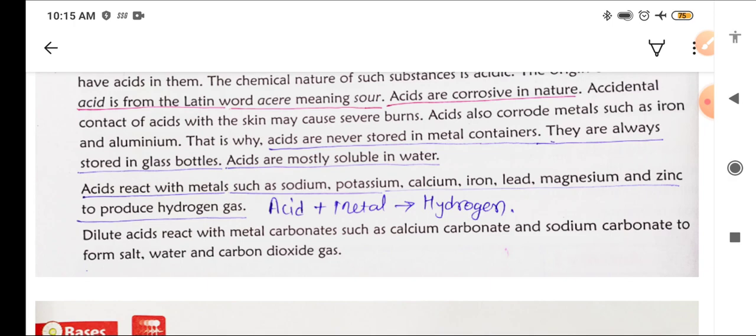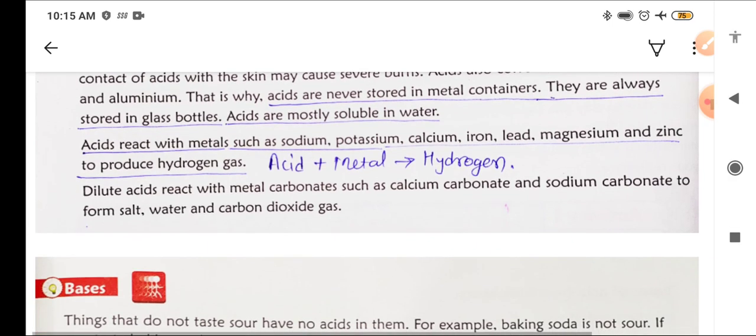Acids are corrosive in nature. Accidental contact of acids with the skin may cause severe burn. Acids also corrode metals such as iron and aluminum. That is why acids are never stored in metal containers. They are always stored in glass bottles. Acids are mostly soluble in water.